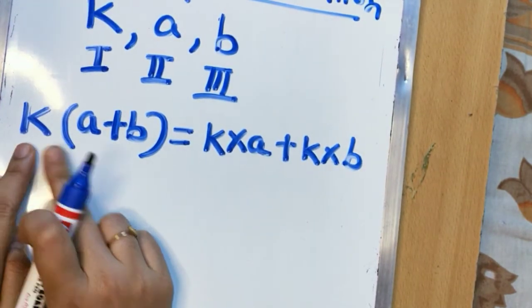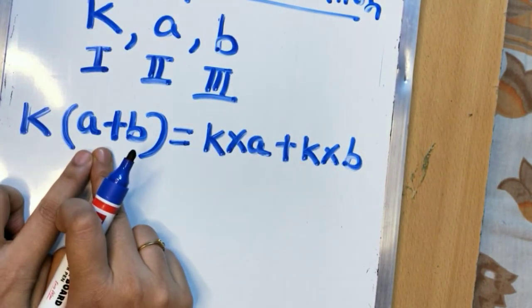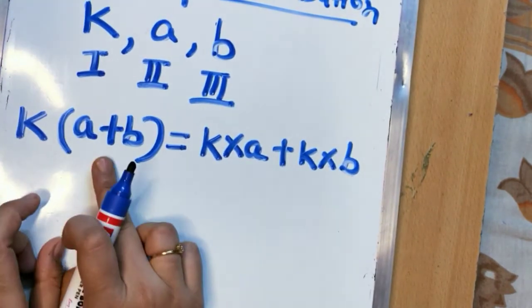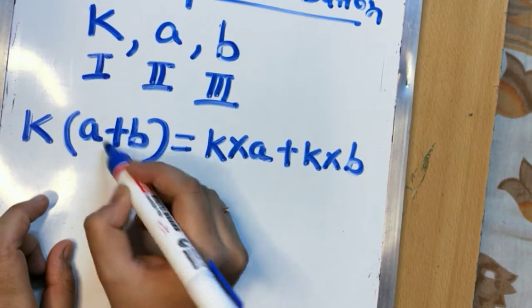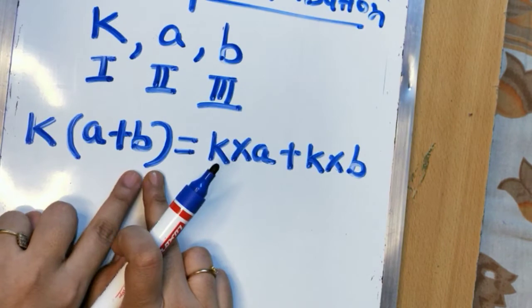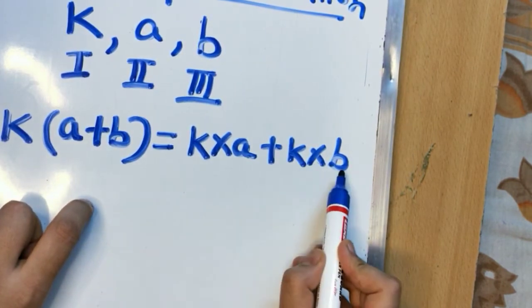What does it mean? This k is getting multiplied with a first. See I am multiplying this k with a first. After that I am applying this addition sign here. After that k is getting multiplied with b that means k into b.